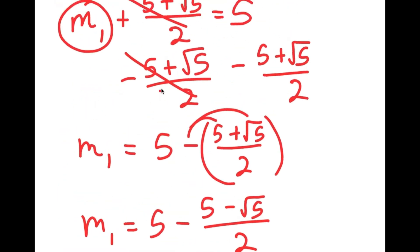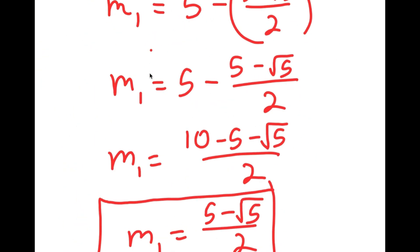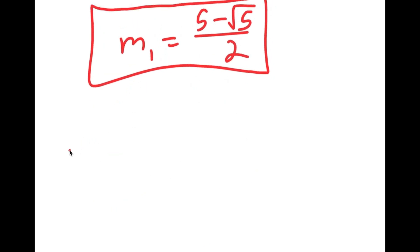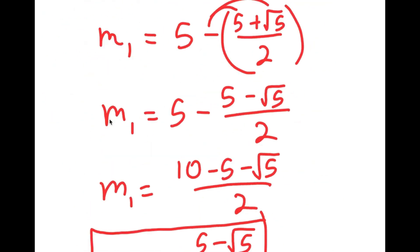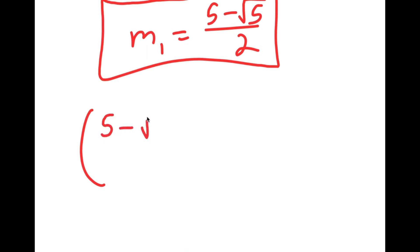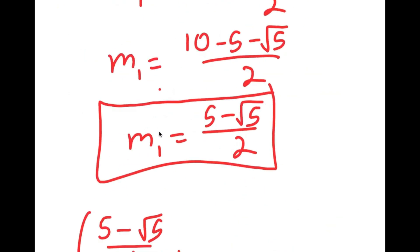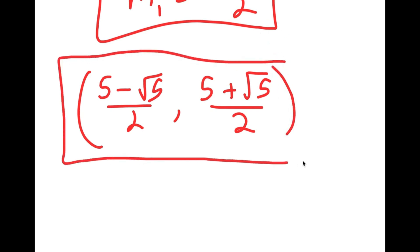Remember that n₁ equals 5 plus the square root of 5 over 2. So my first solution for the system of equations is: m₁ = (5 minus the square root of 5 over 2), n₁ = (5 plus the square root of 5 over 2). This is my first solution to the system of equations.